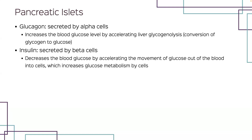If the pancreatic islets secrete a normal amount of insulin, glucose enters the cells easily and a normal amount of glucose stays in the blood. If too much insulin is secreted, more glucose than usual leaves the blood to enter the cells and blood glucose decreases. If too little insulin is secreted, less glucose leaves the blood to enter the cells, so blood glucose increases, sometimes three or more times the normal amount. This is when diabetes mellitus appears.